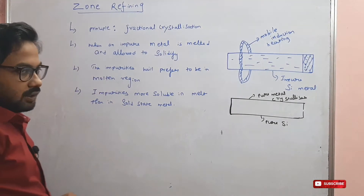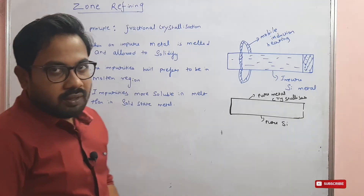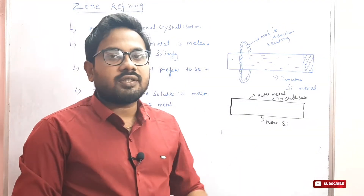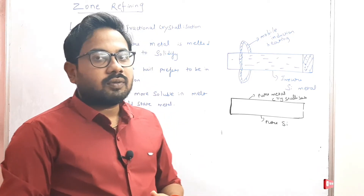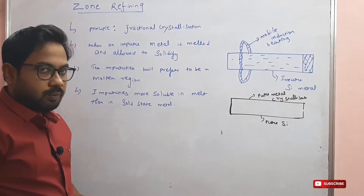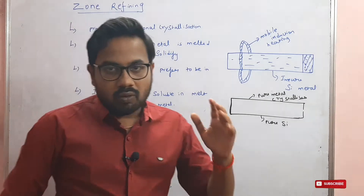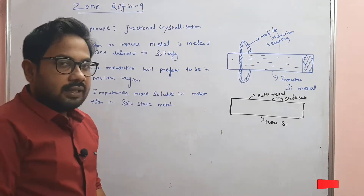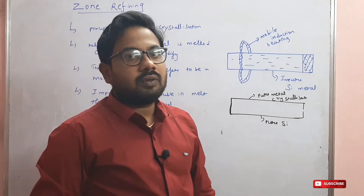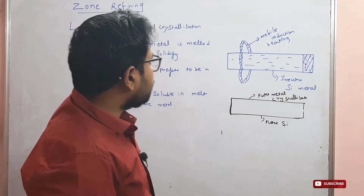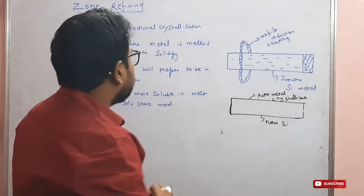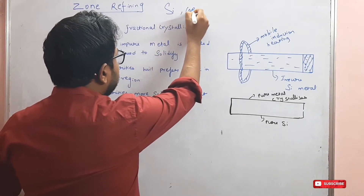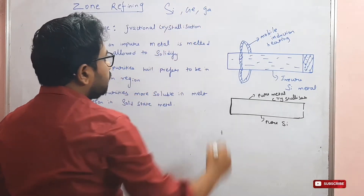So the solidified region is purer but impurities stay in the molten region. We need pure metal, so we use this process. We will get pure metal. The examples are silicon, germanium, and gallium.